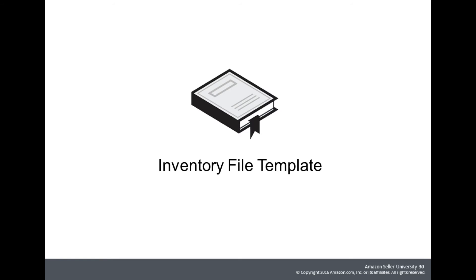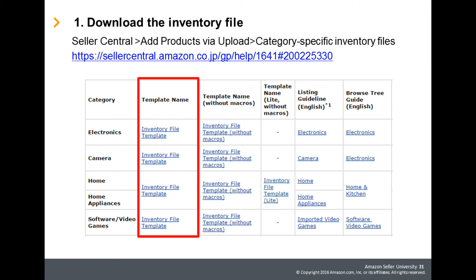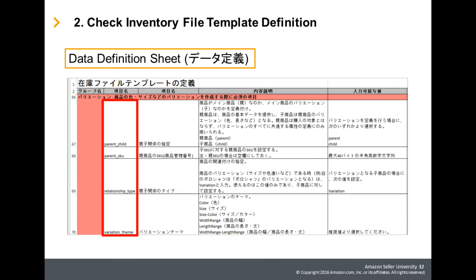Now let's take a look at how the parent and child relationships are formatted in the inventory file template. First, download the inventory file template from Seller Central under Add Products via Upload, and scroll down where you will find a link to category-specific inventory files. You can also go to the Help page link where you will find inventory files for different categories. If you are using Microsoft Excel 2013 or a version older than 2003, we recommend you use the file without the macro. When download is complete, open the file and check the data definition sheet, which explains the different fields you need to input in the file template. You can see the information you need to create a parent-child relationship here as well.